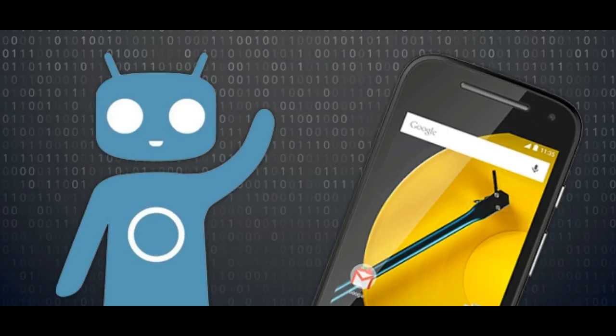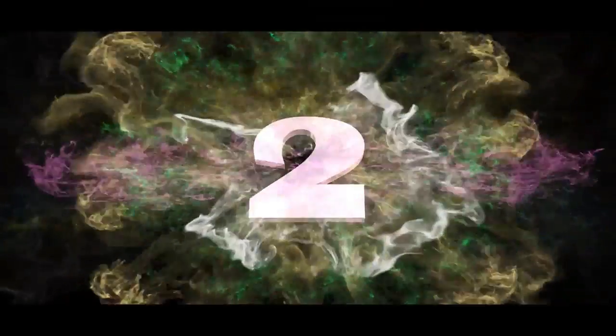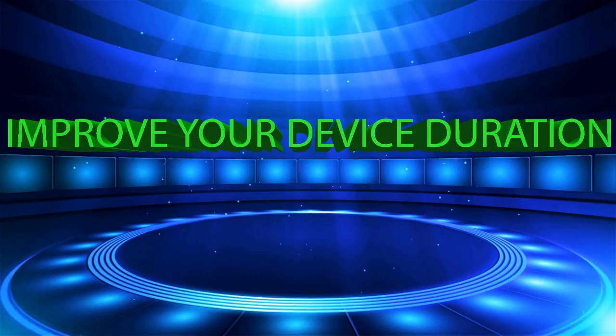A user who has a custom ROM is able to tweak their Android system to personalize the appearance and also to import more features to their device. There are a wide range of custom ROMs; here are some: CyanogenMod, Bliss, POP, Dirty Unicorns, and Paranoid Android.